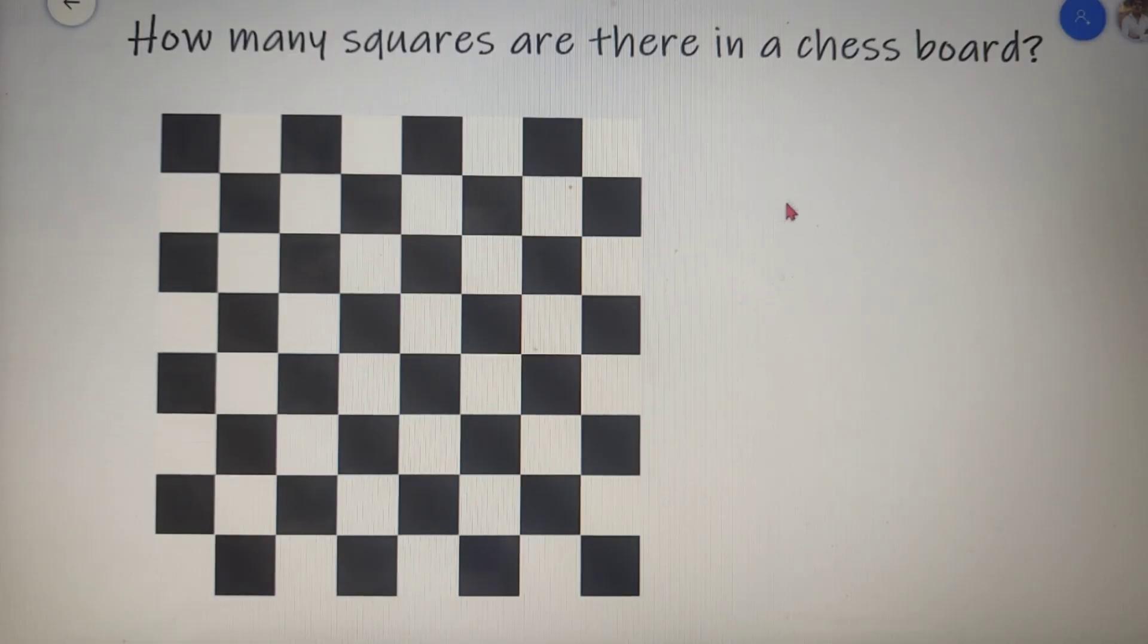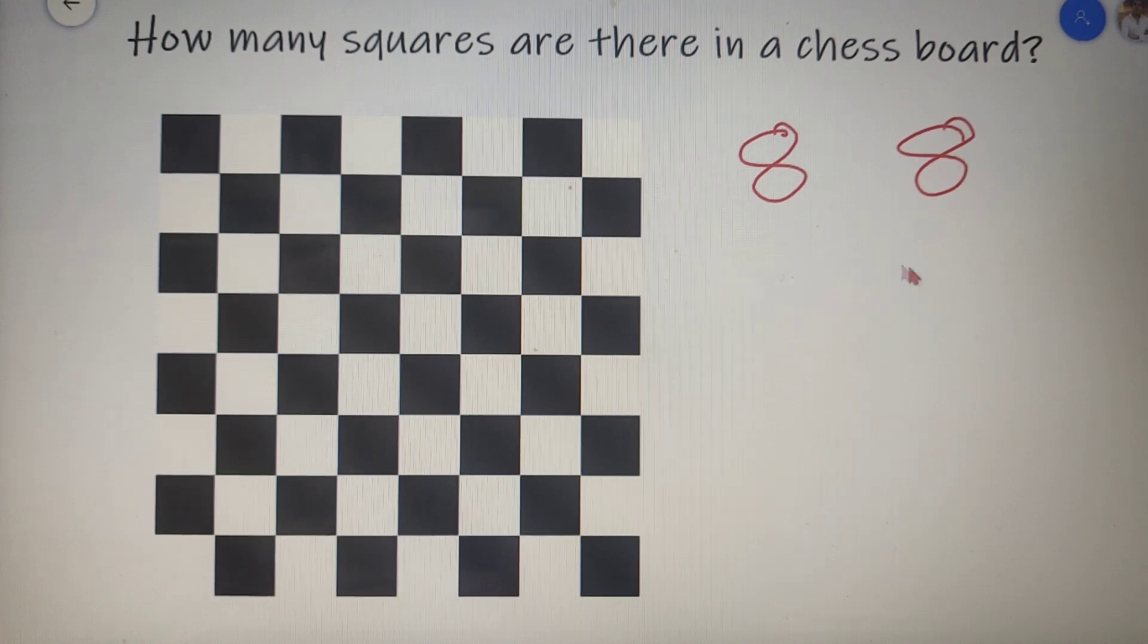Now as you all know that a chessboard has eight vertical columns and eight horizontal columns. So by this information I can say that a chessboard is a square grid of 8 cross 8.